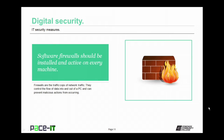A discussion on digital security wouldn't be complete without a discussion on firewalls. Software firewalls should be installed and active on every machine. Firewalls are the traffic cop of network traffic — they control the flow of data into and out of a PC, and help prevent or mitigate attacks by recognizing suspicious activity. Make sure that you use a good quality software firewall on every PC.